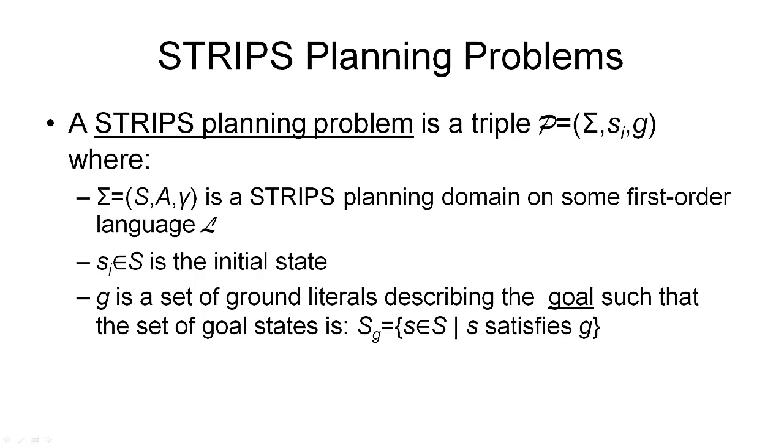Now, with a formal definition of a STRIPS planning domain, we can now define a STRIPS planning problem. A STRIPS planning problem is a triple consisting of three components, and these are given here. This is, of course, the state transition system that we're looking at. This is the initial state, and that is the goal.